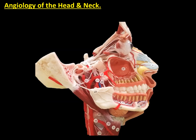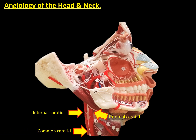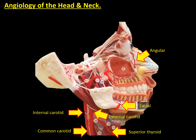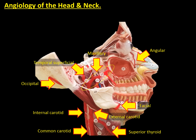In this other model, we can also observe the blood supply for the head and the neck. At the inferior part of the neck, we are observing the common carotid artery, which branches into the internal and external carotid arteries. Going out of the external carotid artery, we can observe inferiorly the superior thyroid artery. Then we also see the facial artery, which projects towards the maxilla to make its terminal branch called the angular artery. Medial to the mastoid process, we are observing the occipital artery, and finally we have the terminal branches, which are the maxillary artery and the superficial temporal artery.